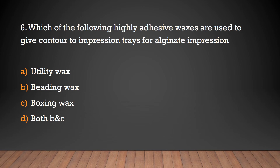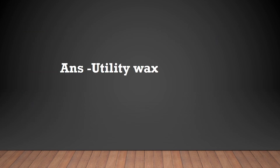Question: Which highly adhesive wax is used to give contour to the impression tray for alginate impressions? Options: utility wax, beading wax, boxing wax, both B and C. Answer: Utility wax. Utility wax gives contour to the impression tray for alginate impressions.